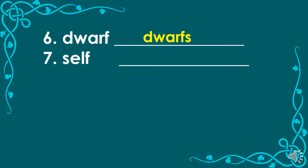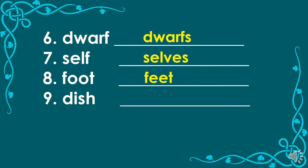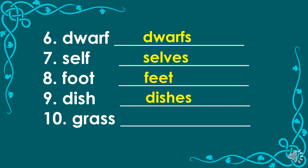Number 7: Self. The correct plural form is selves. We change the letter F to letter V and then add ES. Number 8: Foot. This is an irregular noun. The correct plural form is feet. Number 9 is dish. This is a regular noun, so we simply add ES. The correct plural form is dishes. Number 10 is grass. This is also a regular noun, so we add ES. The correct plural form is grasses.